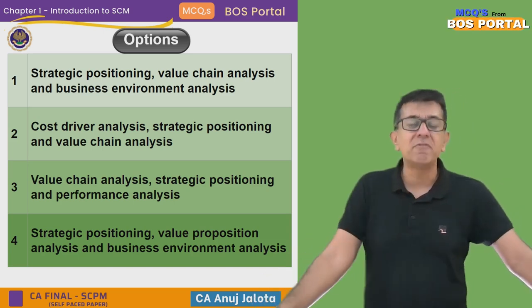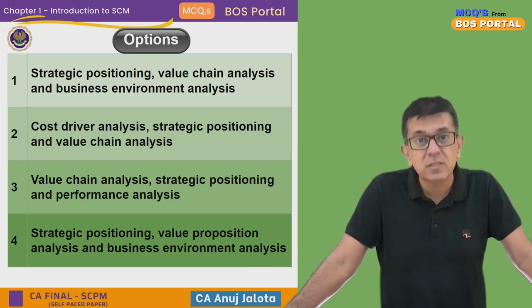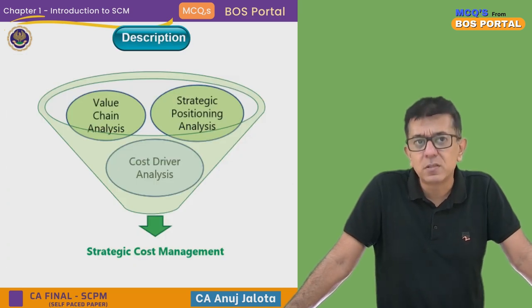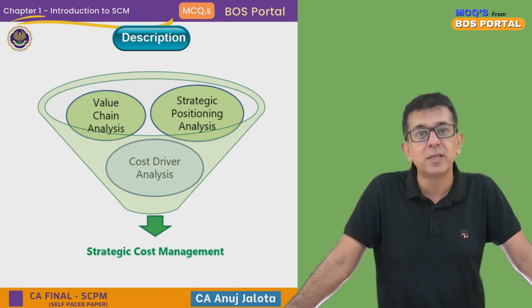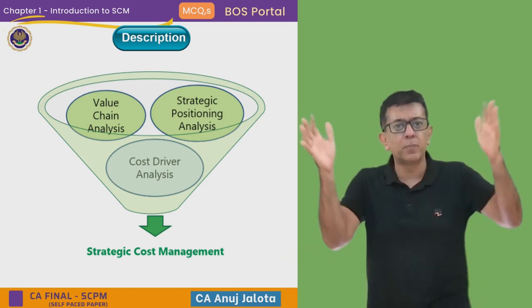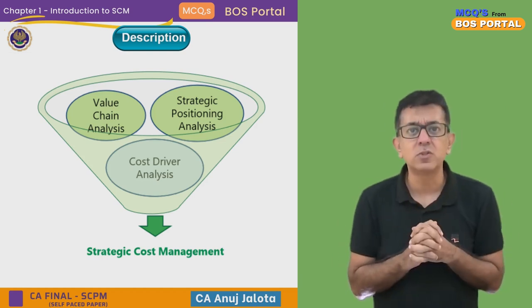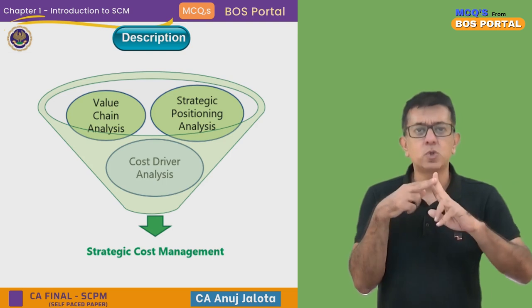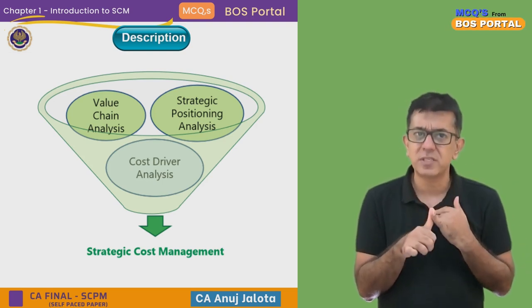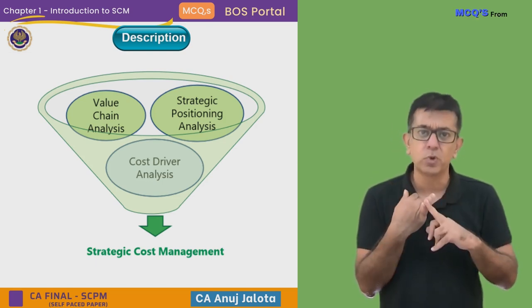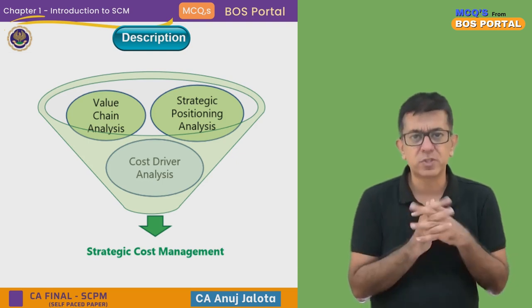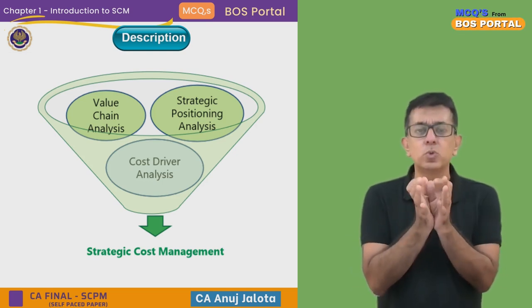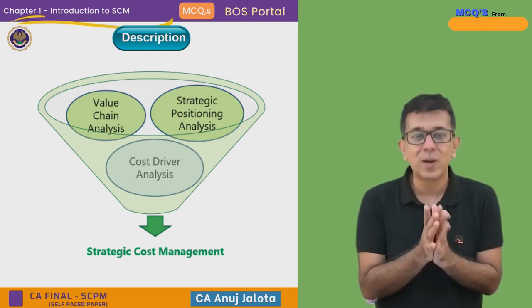Many companies try to increase their cost because they think increasing the cost will increase the value of the product and customers will eventually buy. SCM has three pillars. The first is value chain analysis. Every company, broadly thinking, is basically a group of activities divided into primary and support activities. Primary activities include inbound logistics, operations, outbound logistics, marketing and sales, and after-sales service. Secondary activities include procurement, human resources, technology, and firm infrastructure. We should always identify which activities add value and which do not.